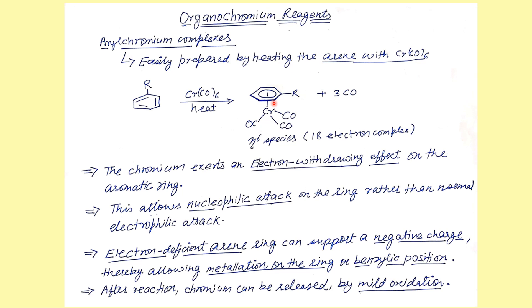Now it means this ring is prone to be attacked by a nucleophile. So the uncomplexed aromatic compound undergoes electrophilic substitution, but the chromium complex undergoes nucleophilic substitution. The electron-deficient ring supports the negative charge and allows metalation on the ring and at the benzylic position. And if you want to remove this chromium complex, you can simply carry out mild oxidation and the chromium gets removed.